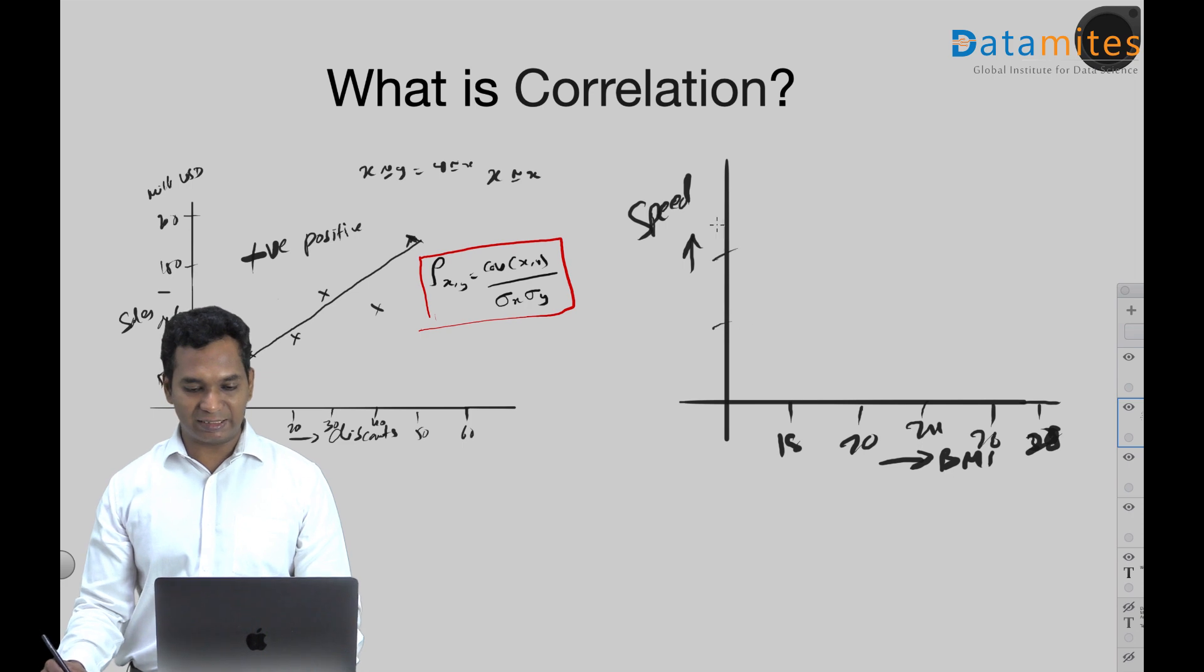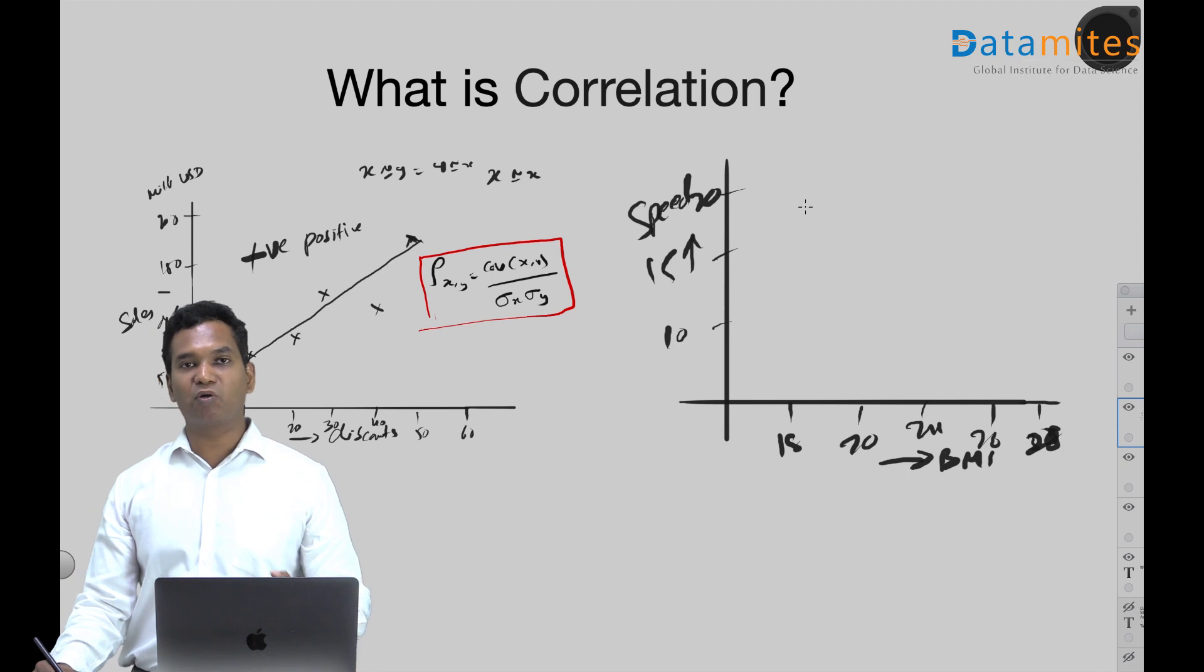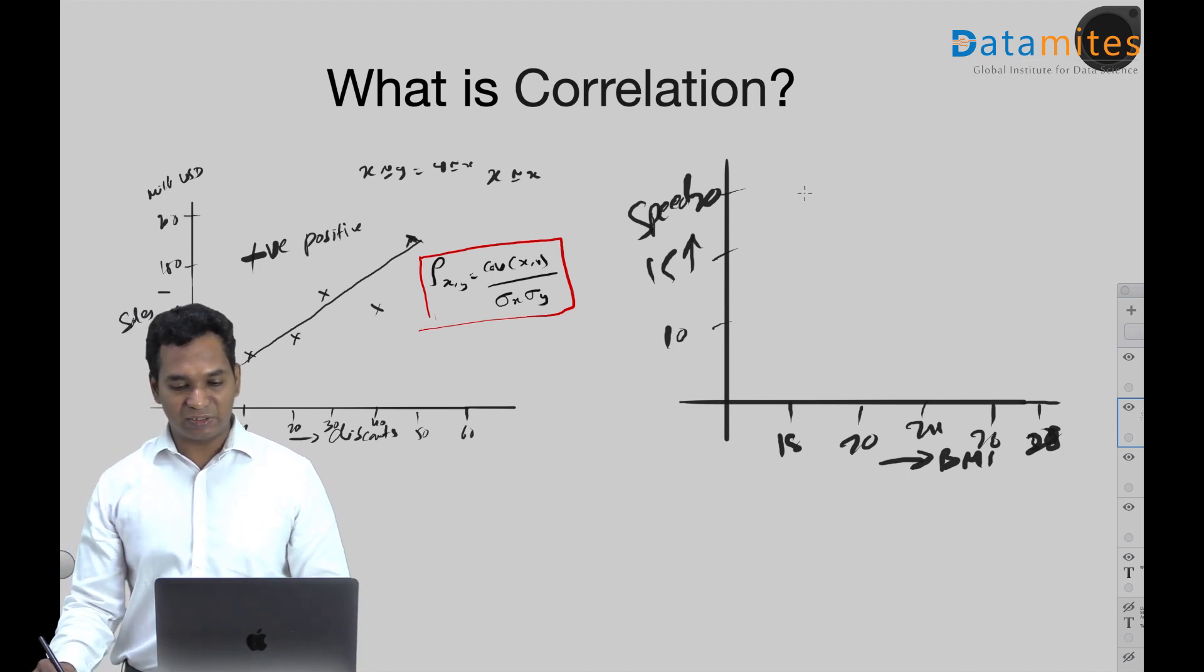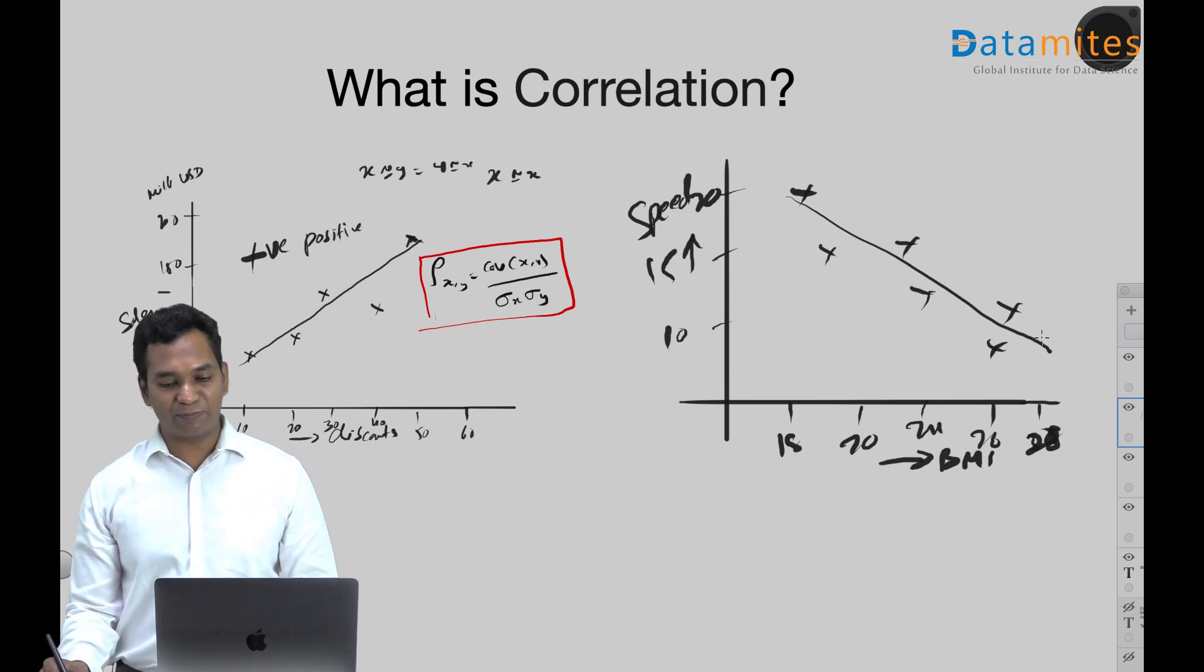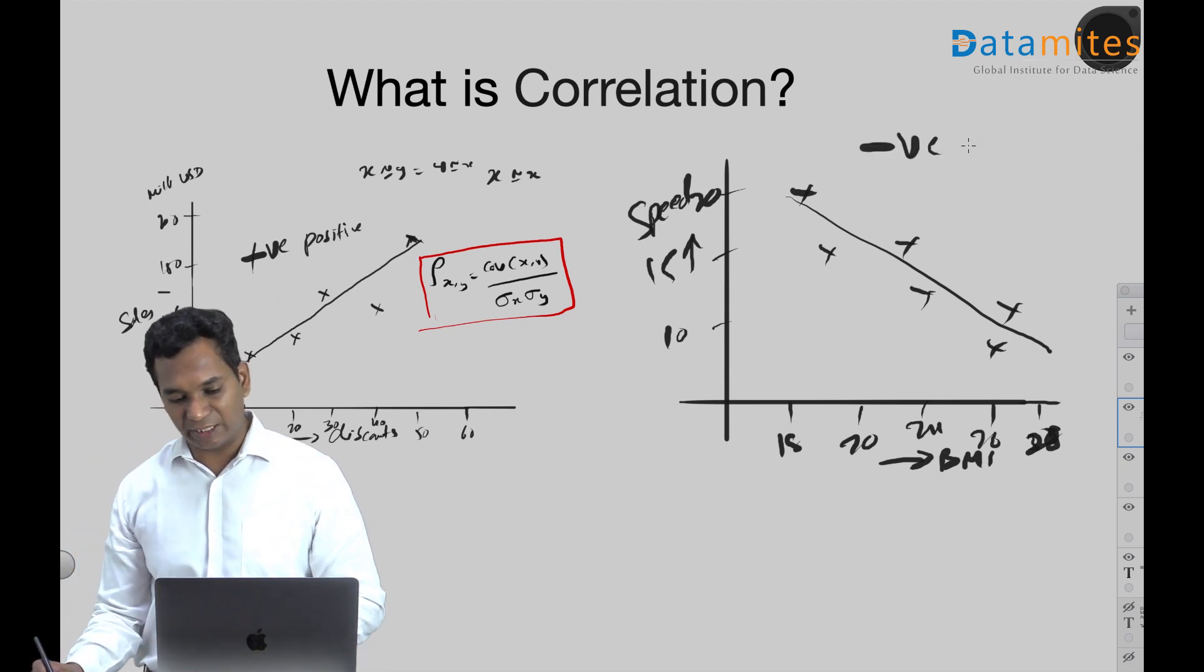These are speeds, let's say speeds in kilometers per hour. Let's say this is 10, this is 15, this is 20, so on and so forth. As the people are more thinner, have a lesser BMI, they tend to run faster. As the BMI goes up, you see that the speed is coming down. And this is an example for your negative correlation.